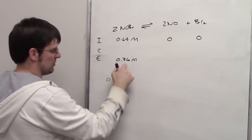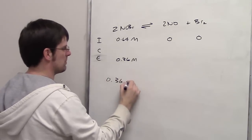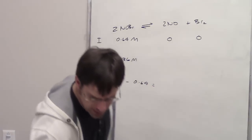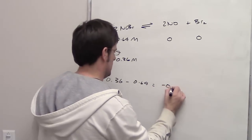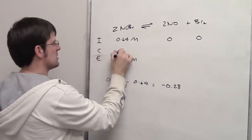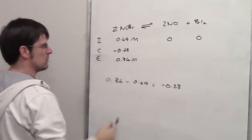The way we handle this is by determining what the difference is between these two. 0.36, the final concentration at equilibrium, minus 0.64, ends up equaling negative 0.28. That is the change in concentration as this goes to equilibrium.